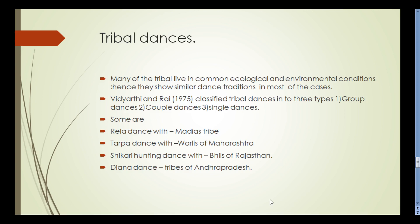Tribal dances: many tribes living in common ecological and environmental conditions show similar dance traditions. They have their own cultural identity, dressing style, eating style, economy, and tribal group. They perform musical instruments and dances specific to their community. Vidyarthi and Rai (1975) classified tribal dances into three types: group dances, couple dances, and single dances. Examples include the Rela dance of Madhya Pradesh tribes and the Tarpa dance of the Warlis of Maharashtra.